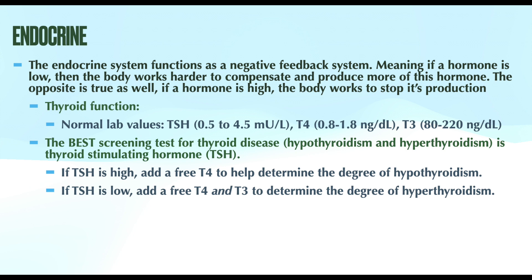The hypothalamic-pituitary-adrenal axis helps maintain the homeostasis of our body's hormones. The hypothalamus stimulates the anterior pituitary gland to produce follicle stimulating hormone (FSH), luteinizing hormone (LH), and thyroid stimulating hormone (TSH). FSH, LH, and TSH communicate with their target organs — either the thyroid or the ovaries — to produce active hormones such as estrogen or the thyroid hormones.